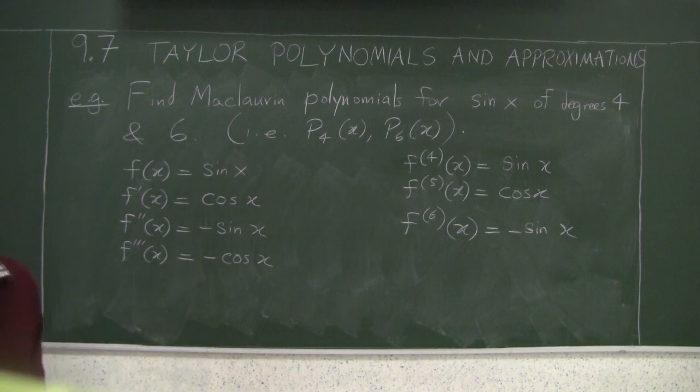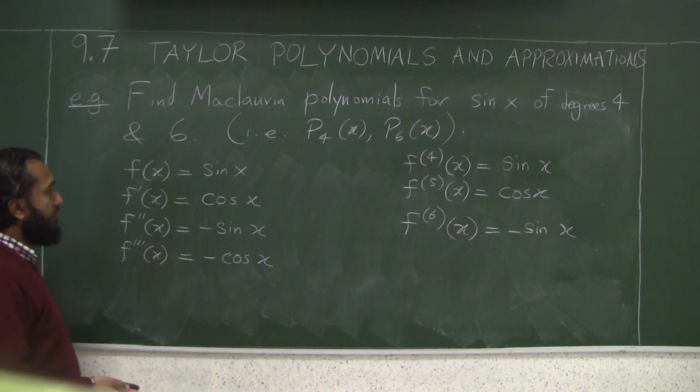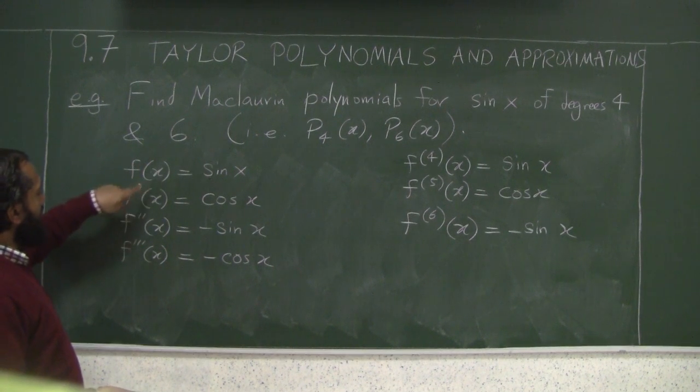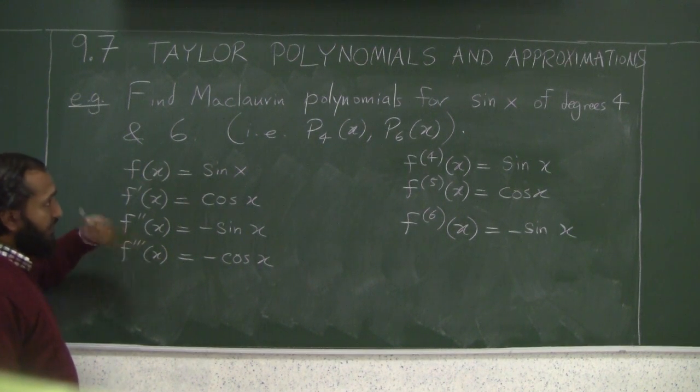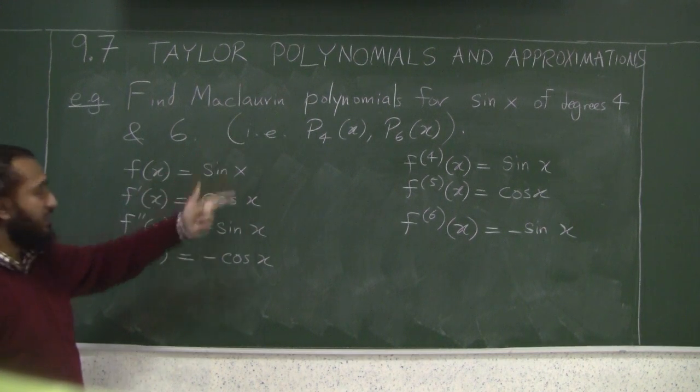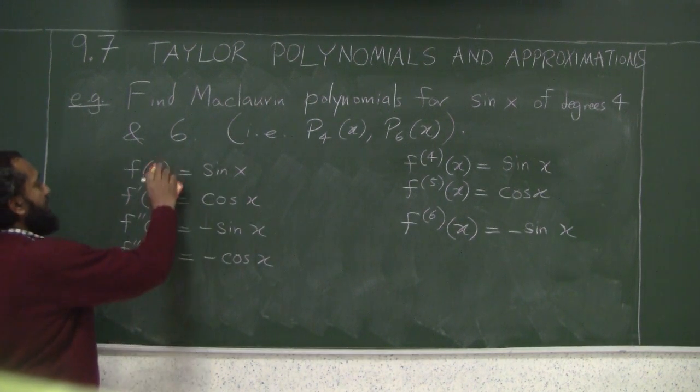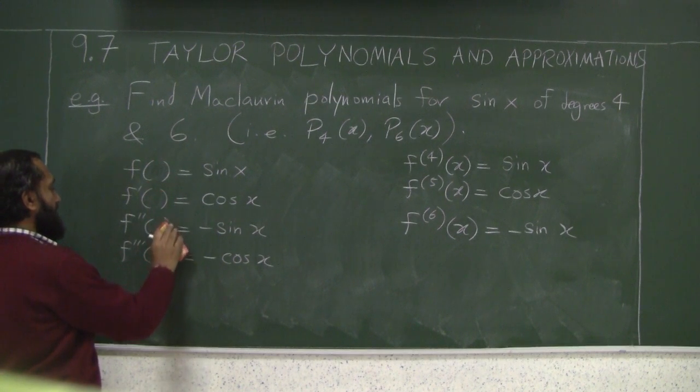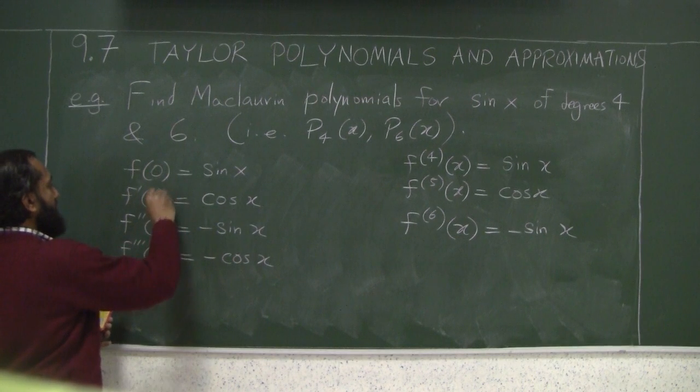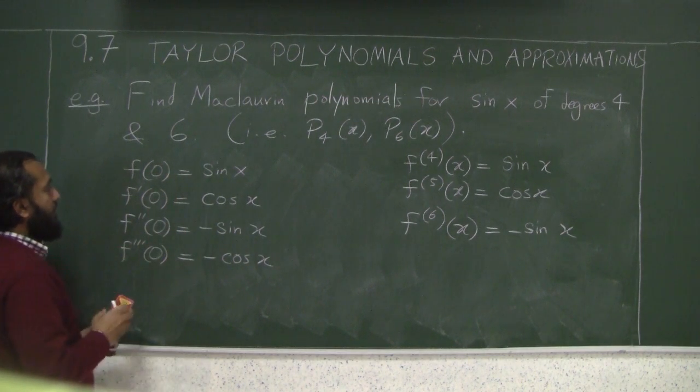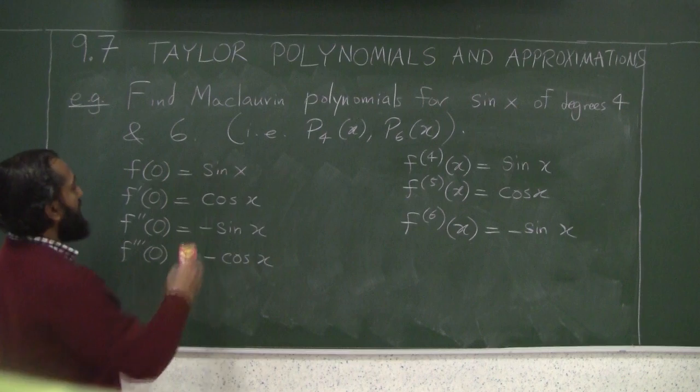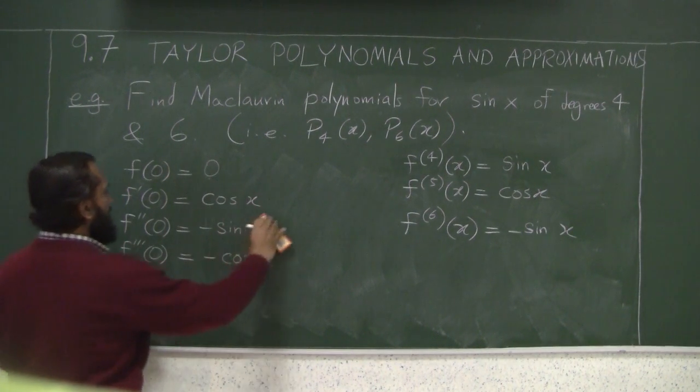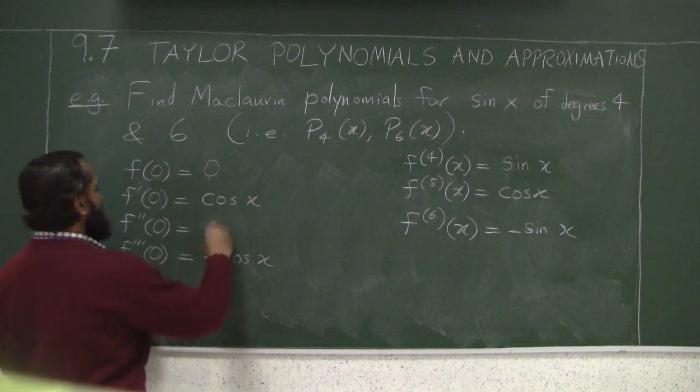Okay, to save time, what we need to do now is we need to compute the values of these at c equals 0. So if I put 0 in all of these... If I put 0 here, sine of 0 is 0, and this also is 0.